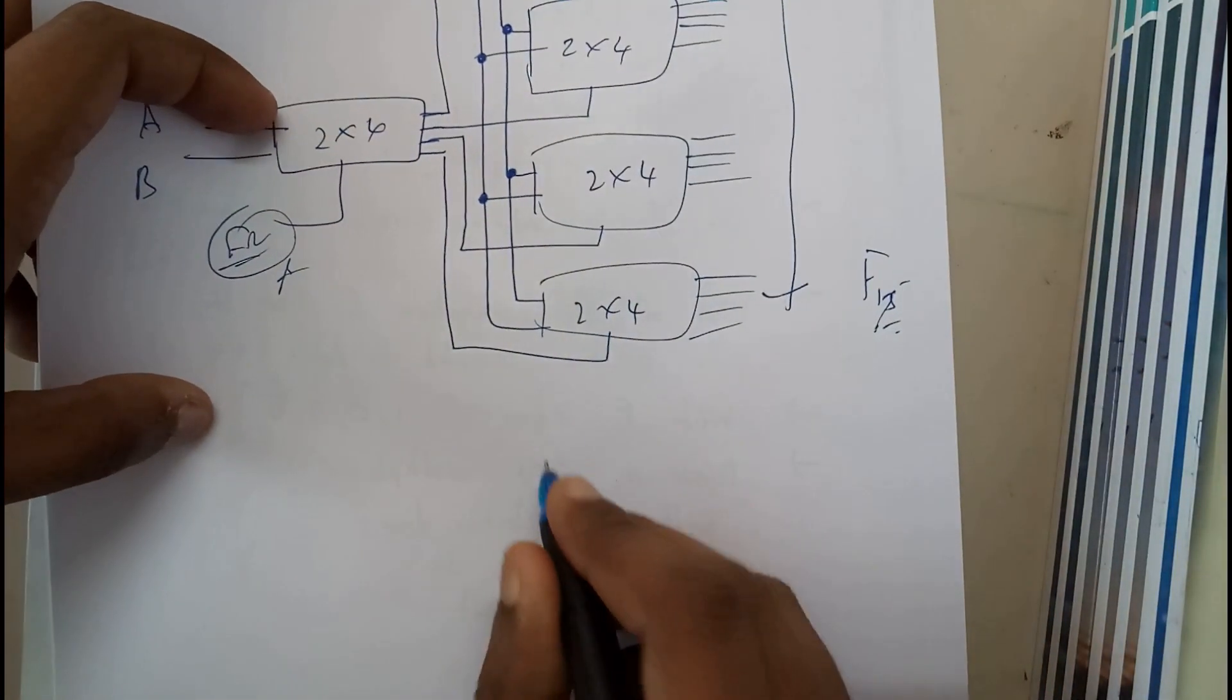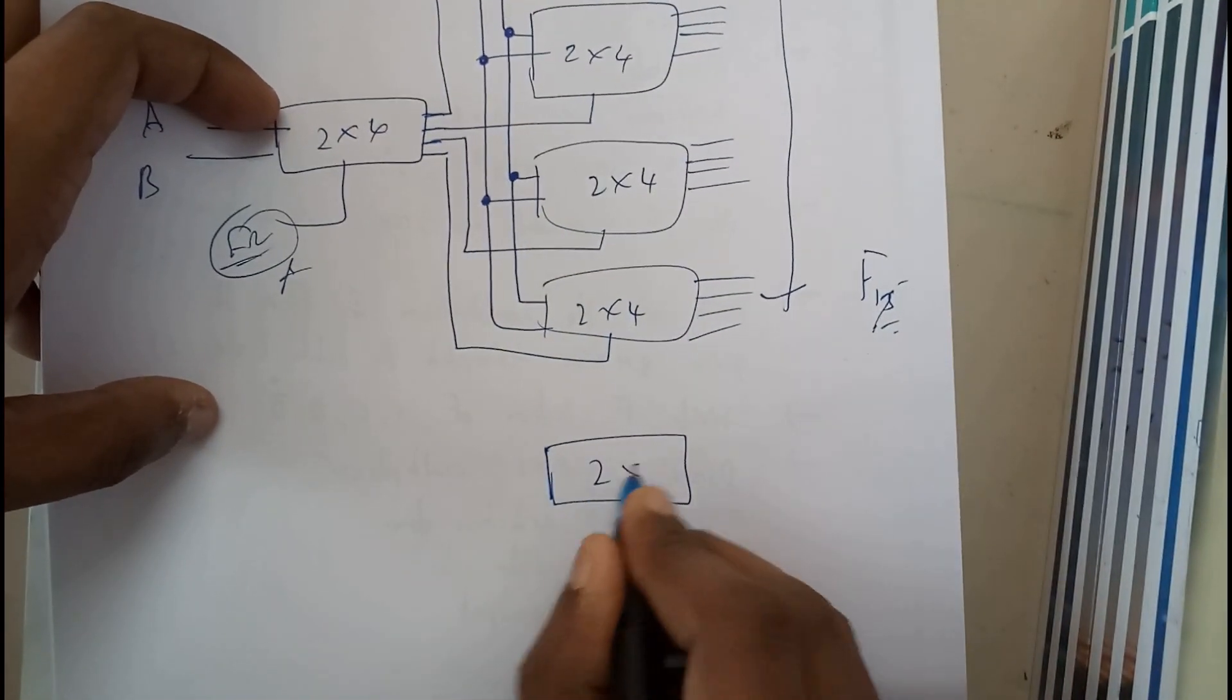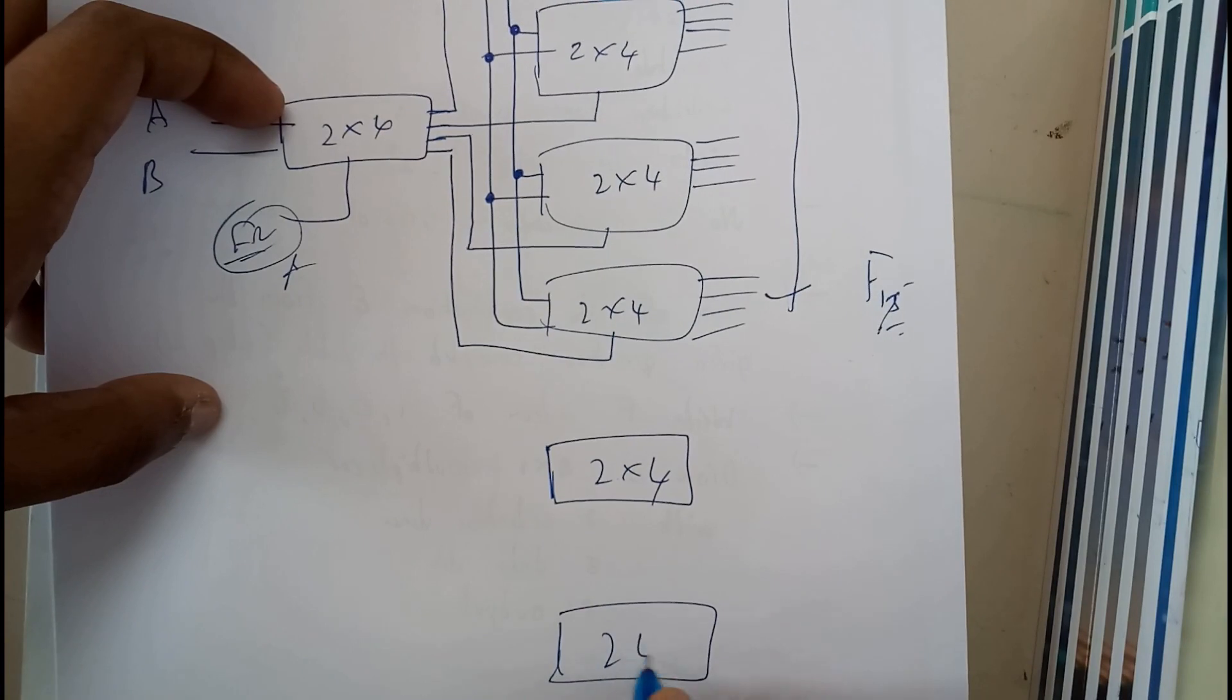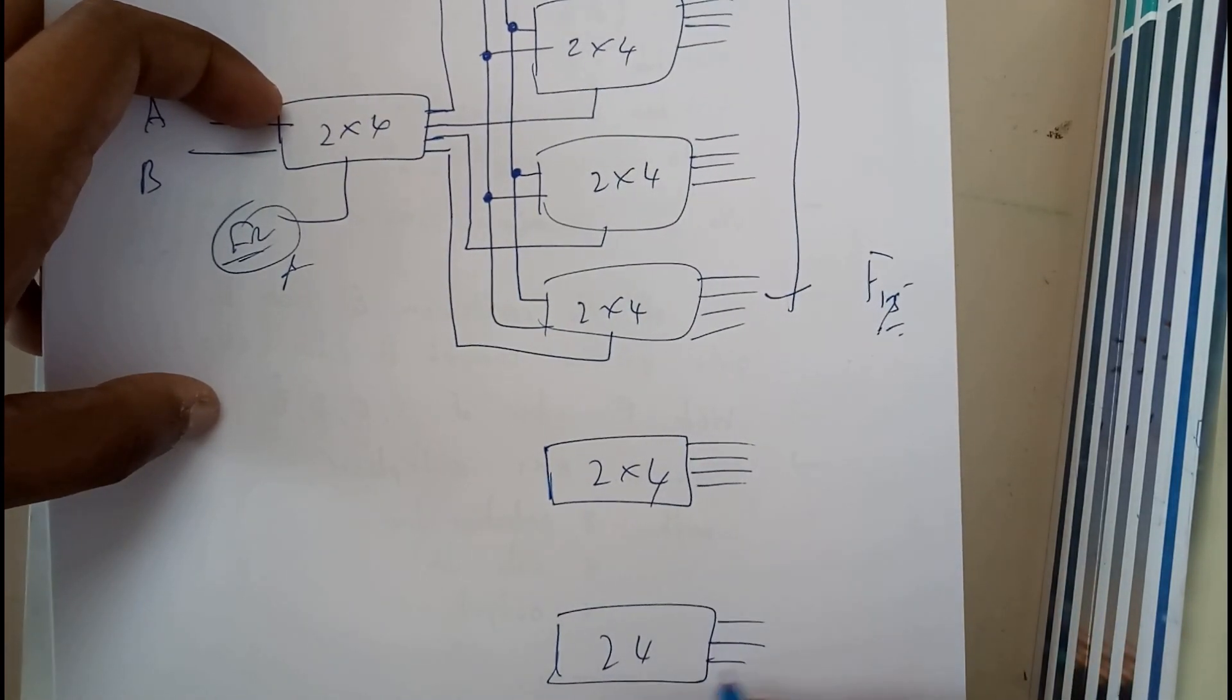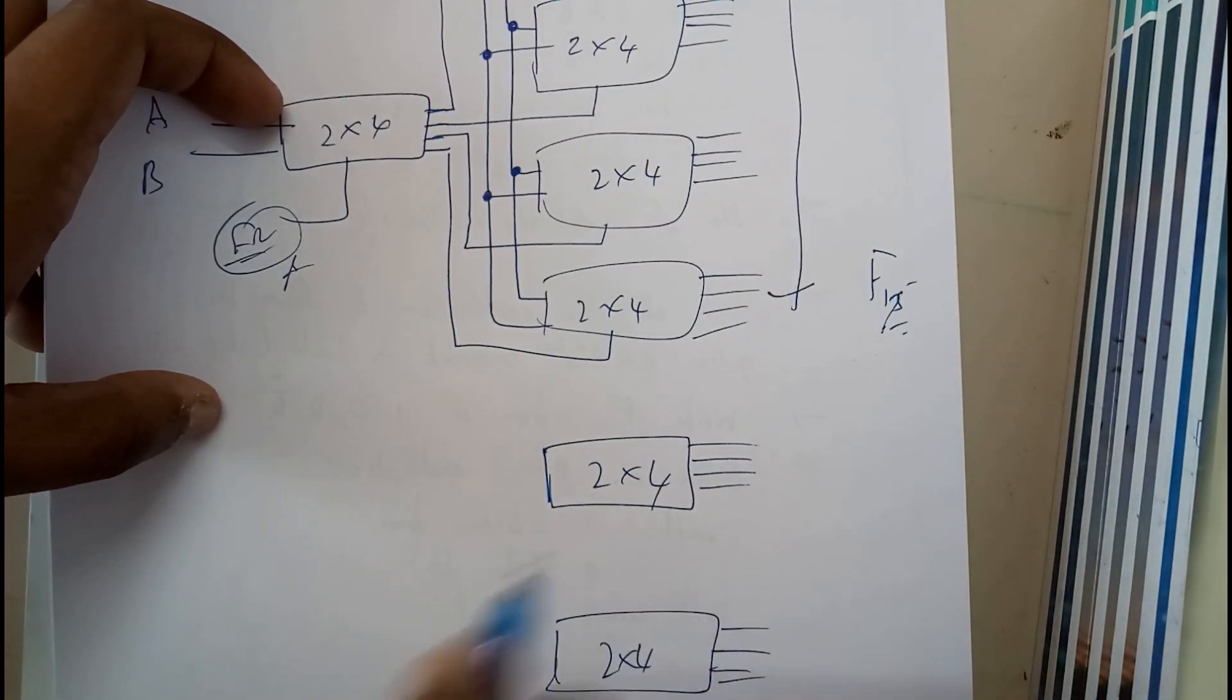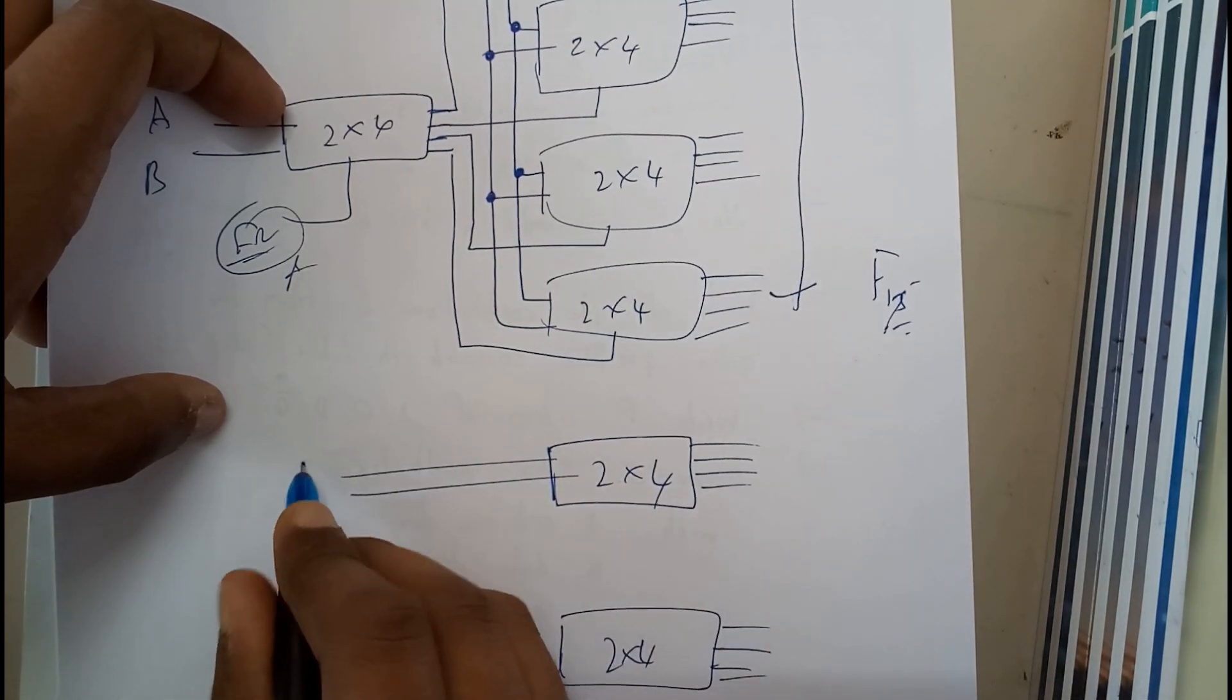Basically we need two 2 into 4 decoders, right? So 2 into 4, so we got four outputs, four outputs. So we are satisfied with outputs, so now it's all up to inputs.